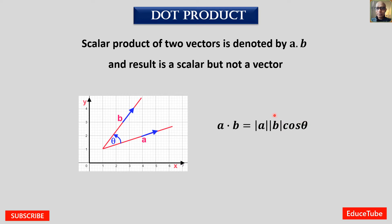This formula we will use in the next slide. So we have to memorize this: a dot b equals magnitude of a multiplied by magnitude of b multiplied by cos theta.